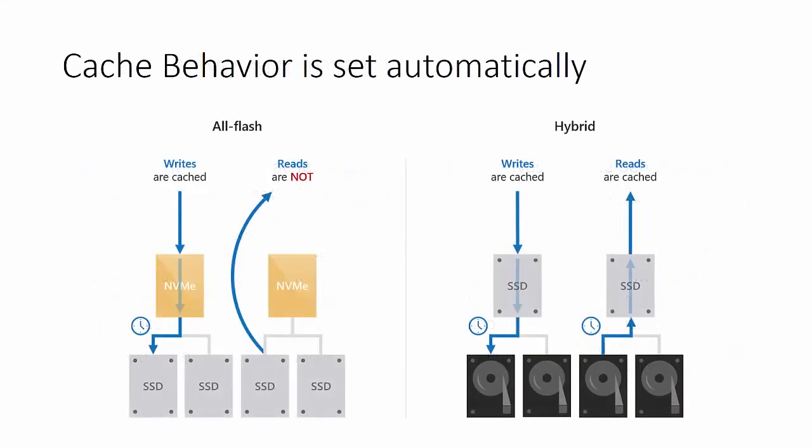Cache behavior can be set manually, but it is also automatic by default. In an NVMe-to-SSD configuration, only writes are cached — you cache the write via NVMe, but reads come directly from the SSD. In a hybrid environment where SSDs front-end hard disk drives, both writes and reads are cached, so there is no direct read into Storage Spaces Direct when using hard disk drives.